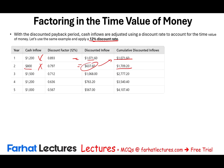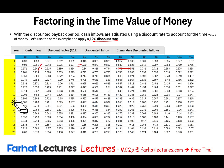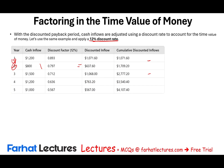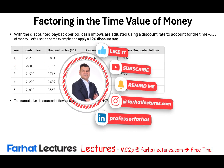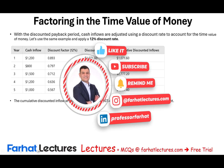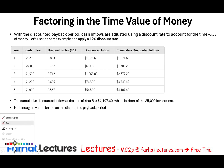Continuing the discounted cumulative totals through year five, the total discounted amount reaches only $4,107.40, which is less than the $5,000 initial investment. This project is rejected using the discounted payback period, because the discounted cash inflows never fully recover the initial investment within the project's life.